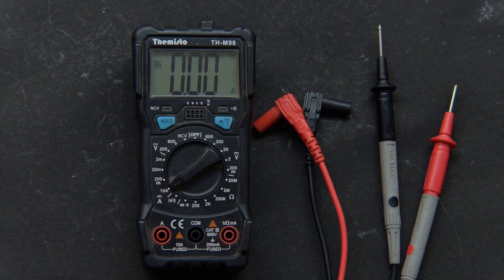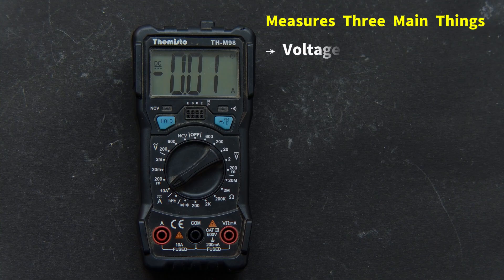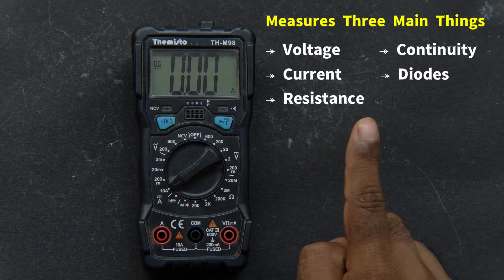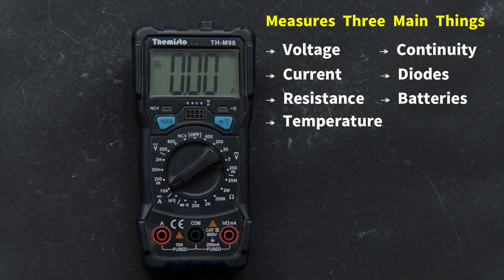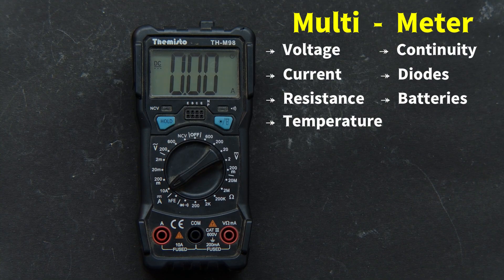Let's start from the beginning. A multimeter is a device that measures three main things: voltage, current, and resistance. Some models also test continuity, diodes, batteries, and even temperature. It's called a multimeter because it combines multiple measuring tools into one.